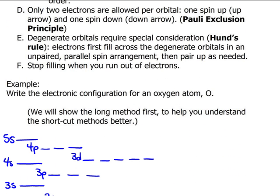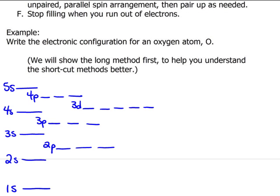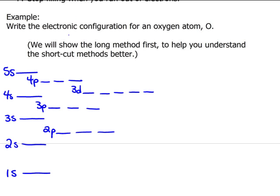When we're writing an electron configuration for an atom, the number of electrons equals the number of protons. So we look at oxygen, for example. On the periodic table, it has eight protons. Therefore, it will also have eight electrons. So I'm going to draw eight arrows on this energy diagram that I've sketched. Please understand, this is a rough sketch, so it is not to scale.